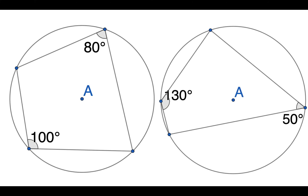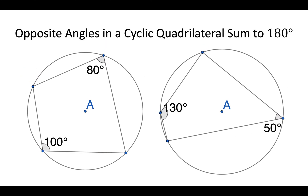Now we've got cyclic quadrilaterals — these are four-sided shapes inside a circle where all corners are touching the edge of the circle. Can you see a pattern? We've got 80 and 100, 130 and 50. Yes, the opposite corners always add up to 180. So this corner and this corner will add up to 180, and this corner and this corner will add up to 180. Opposite angles in a cyclic quadrilateral sum to 180 degrees.